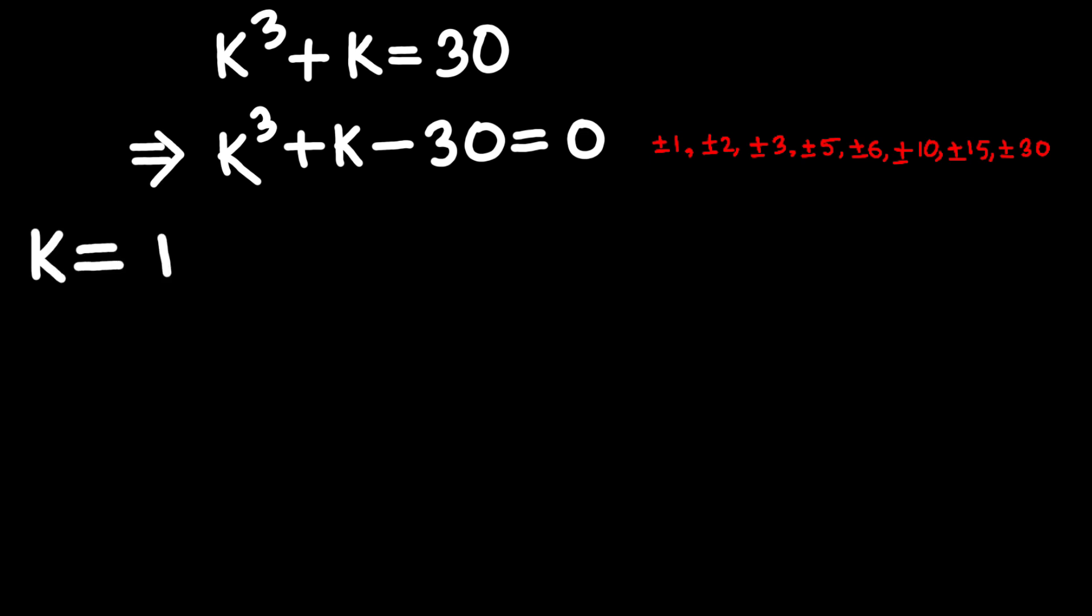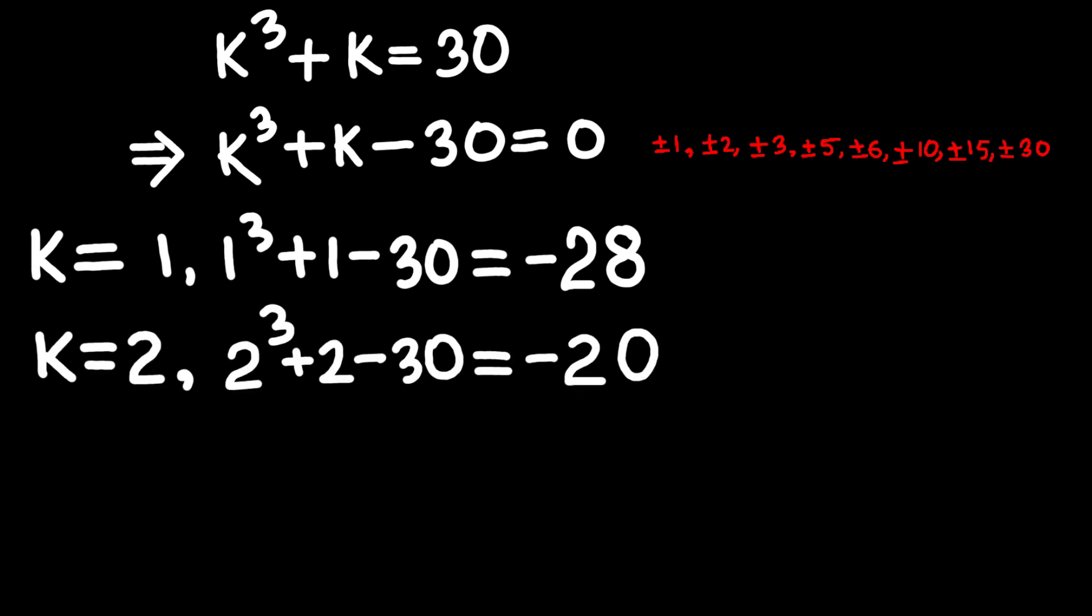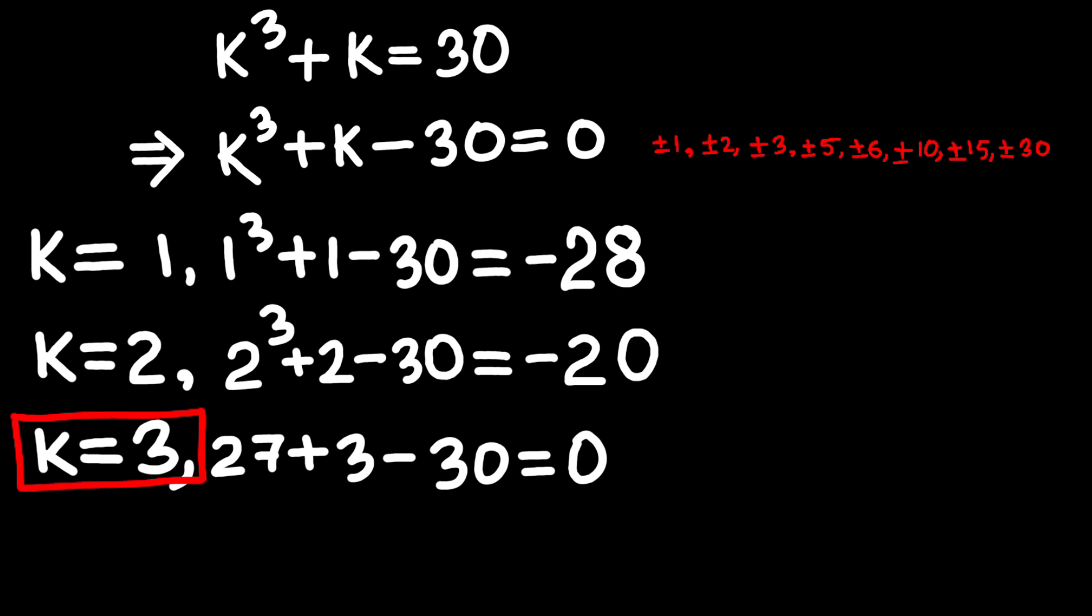When K equals 1, it leaves us with negative 28, not 0. When K equals 2, it gives us negative 20. Still wrong. And then, oh, look at this. When K equals 3, substitute it in, we get 27 plus 3 minus 30, which equals 0. Ladies and gentlemen, we got them. Our first real root. Mark it down. K equals 3.